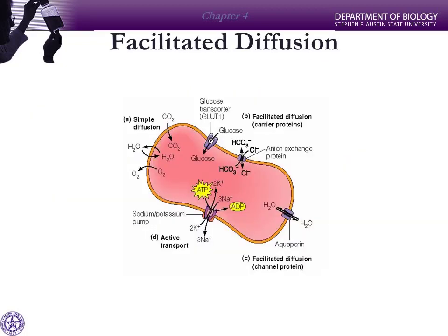Here we have a protein called an aquaporin — which allows water to be transported. That's important in the kidneys, which respond to a hormone from the pituitary gland that regulates how many aquaporins are present in kidney tubules. More aquaporins means less urine produced; fewer aquaporins means more urine — a response to dehydration. We also have a transporter that moves bicarbonate out and chloride in — transporting two molecules in opposite directions — and a glucose transporter.